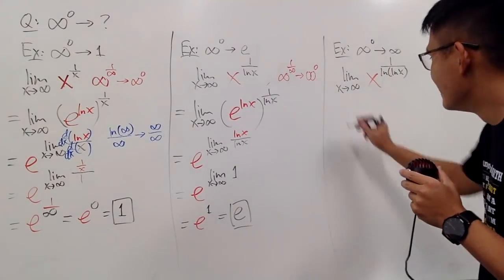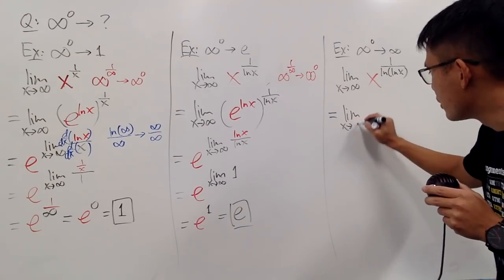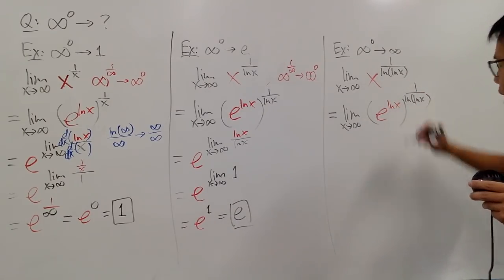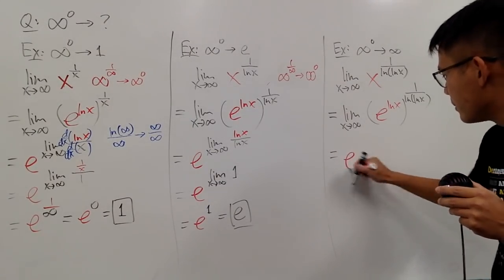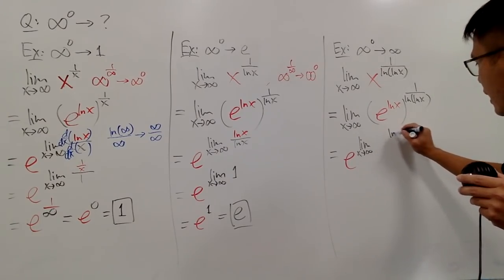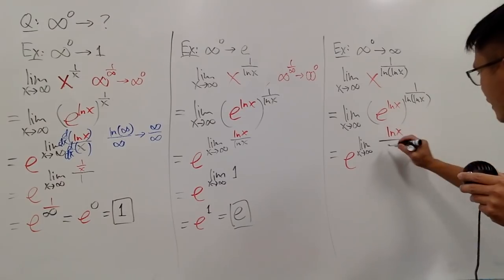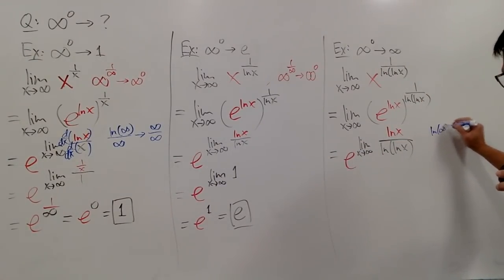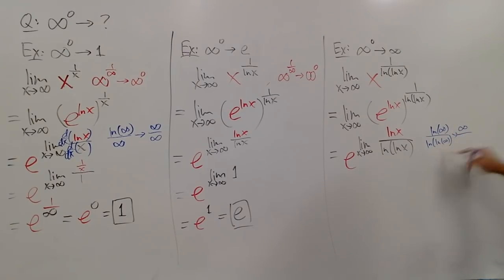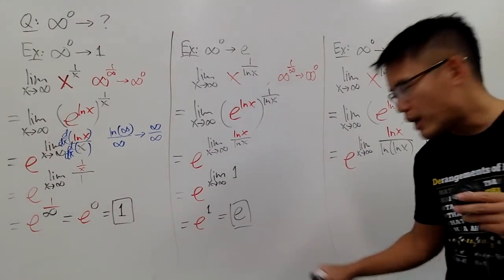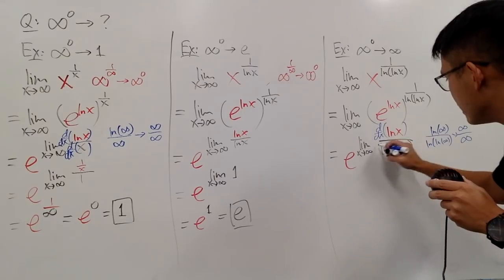Let me work through this. The limit as x approaches infinity of x, rewritten as e to the ln x, raised to the 1 over ln(ln x). Putting e on the outside, we take the limit as x approaches infinity of ln x over ln(ln x). Plugging in infinity: the top is ln of infinity (infinity) and the bottom is ln of ln of infinity, which is also infinity but a smaller infinity. This is still L'Hôpital's rule ready, so we differentiate top and bottom.